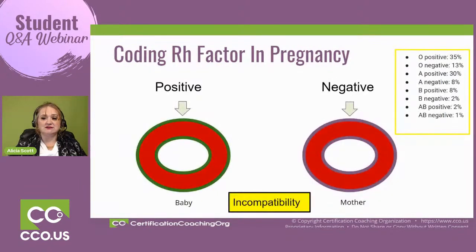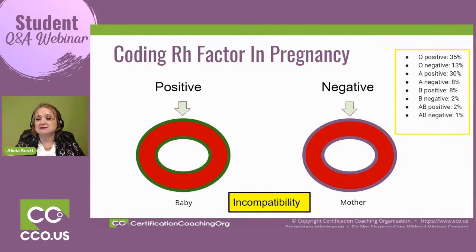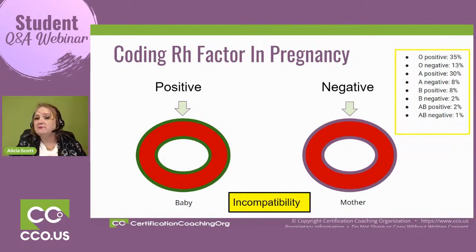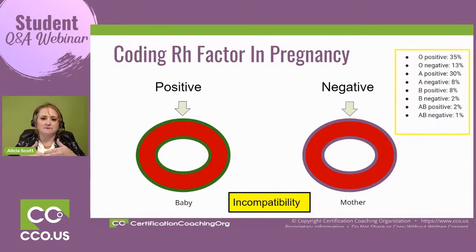Over here in the yellow box, the most common blood type is O positive at 35%, O negative 13%, A positive 30%, A negative 8%, B positive 8%, B negative 2%, AB positive 2%, and the most rare is AB negative. So if you have a positive baby and a negative mother, there's incompatibility and problems can occur.